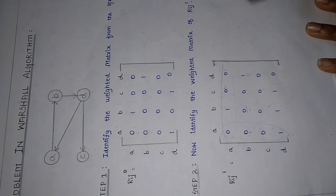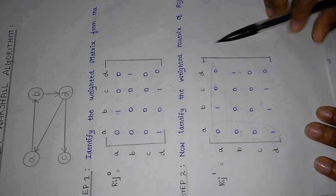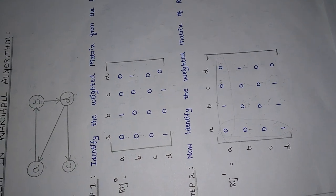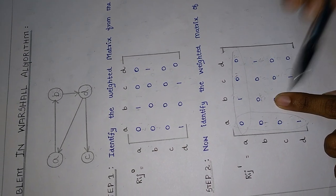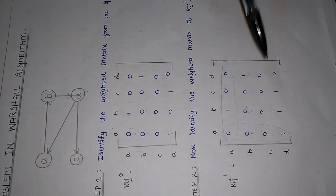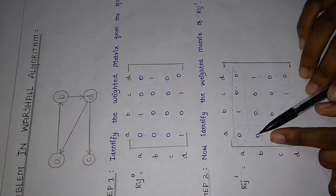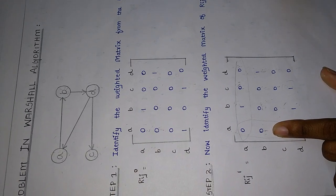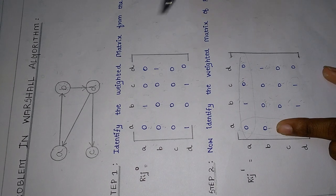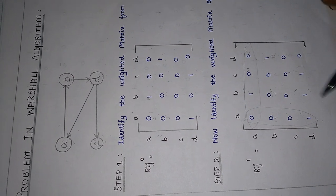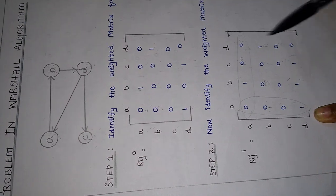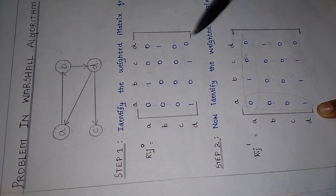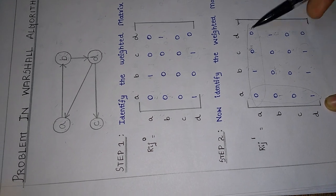Now, Step 2: identify the weighted matrix R[i][j][1]. In this, we have to consider the first row and the first column. We have to perform the AND operation. 0 AND 1 is 0. We compare with the before value — if it is 0, we write 0; if it is 1, we add and write 1. So 0 plus 1 is 1. For D: 1 AND 1 is 1. 1 AND 0 is 0. Before value is 1, so 0 plus 1 is 1. Write 1. 1 AND 0 is 0.